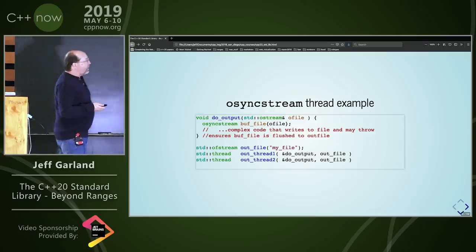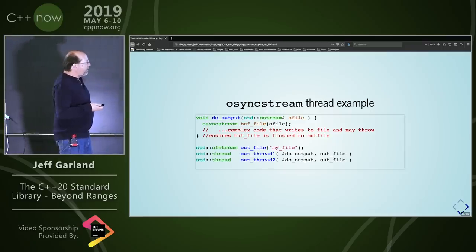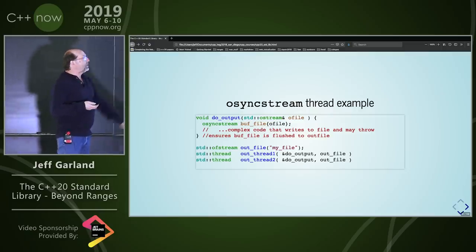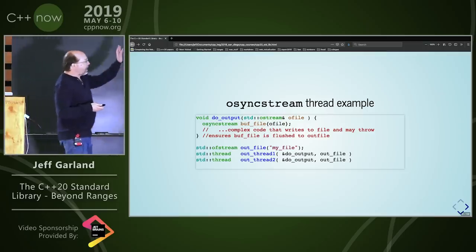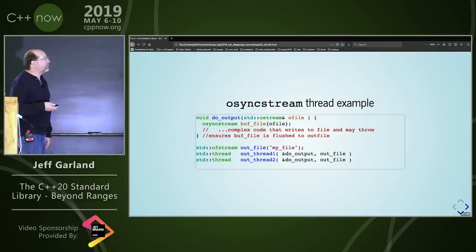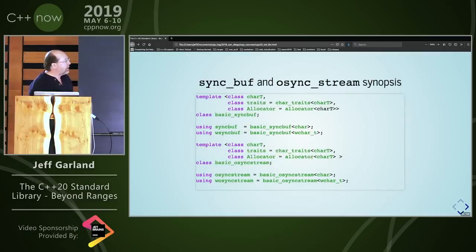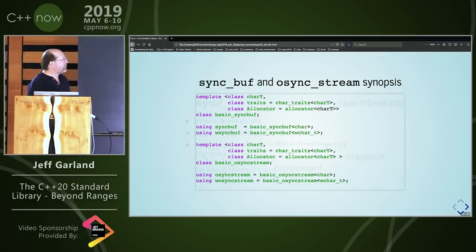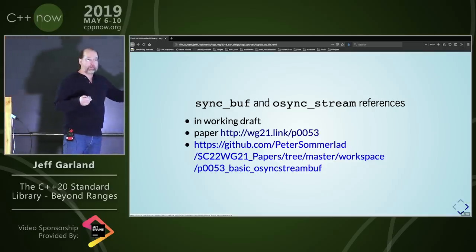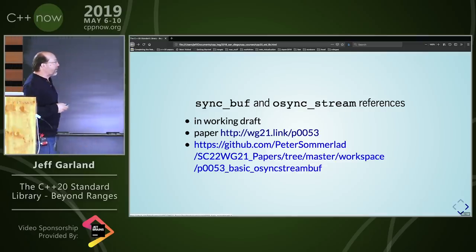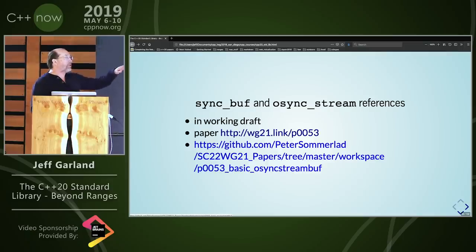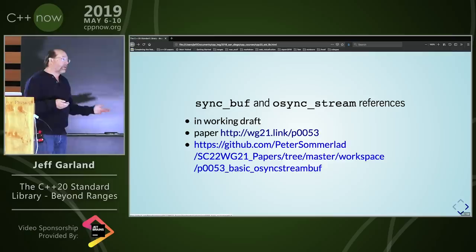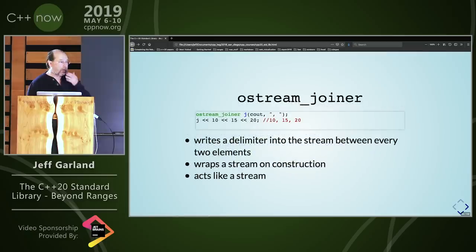Here's a more realistic example: you've got multiple threads, you're doing some kind of function against a file with complex code — the osyncstream only flushes when you exit the function. This is what the header looks like: standard stream header with basic versions and usings for various char types. This is already in the working draft, so this one is going to ship. Peter told me that you really need your library vendor to implement this well because of the internals of streaming.